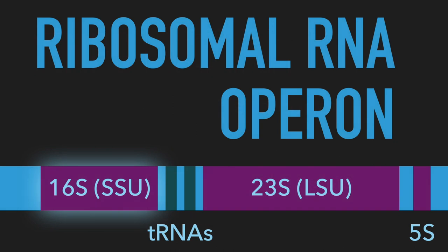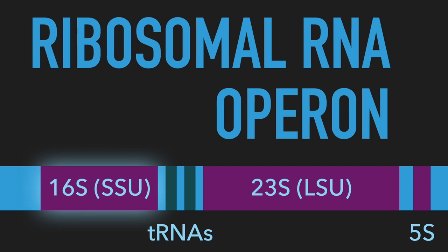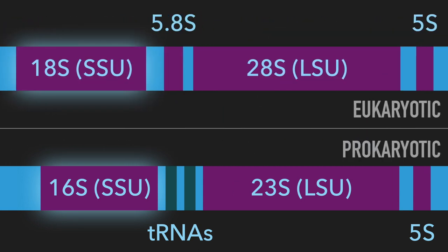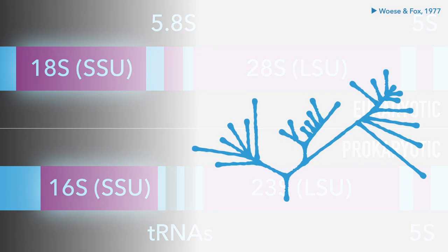The ribosomal RNA operon is a collection of RNA genes that form the ribosome, which is the molecular machinery that performs the process of translation. All currently known life forms require ribosomes to produce functional proteins, and both prokaryotes and eukaryotes have ribosomal RNA genes organized in operons. Here, we will focus on a specific gene — the ribosomal RNA component of the small ribosome subunit, which is also called the 16S RNA gene in prokaryotes and the 18S RNA gene in eukaryotes. This single gene served as the foundation of the famous three-domain model of the tree of life proposed by Woese and Fox.